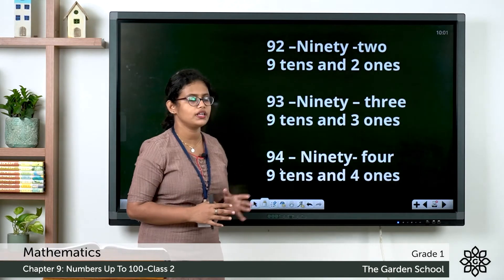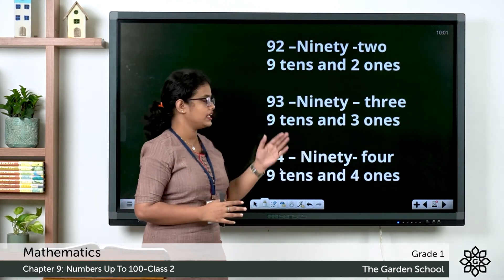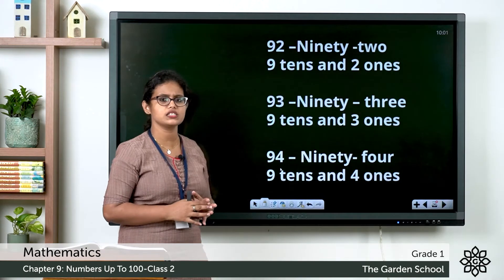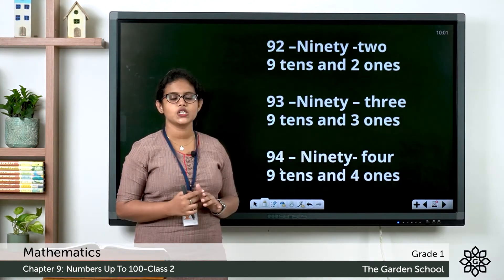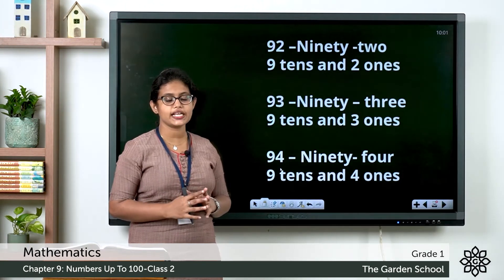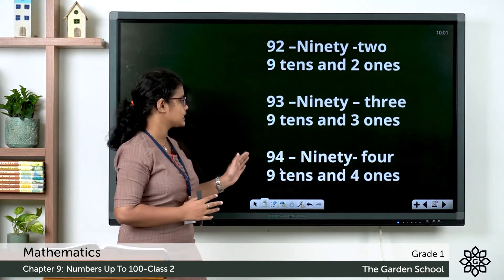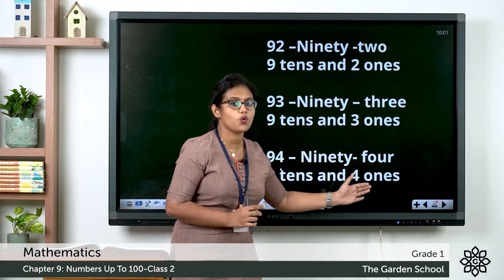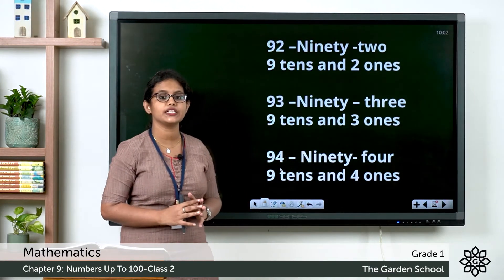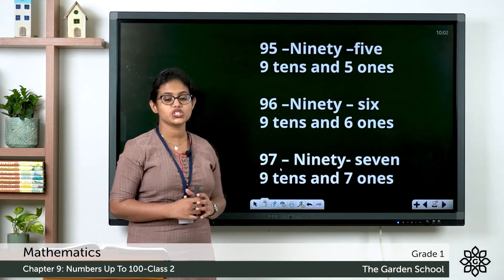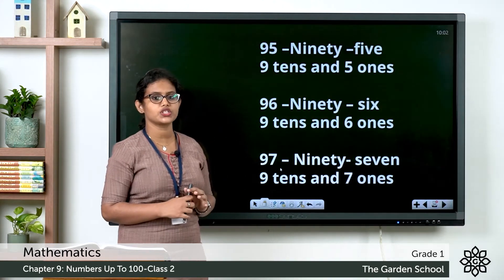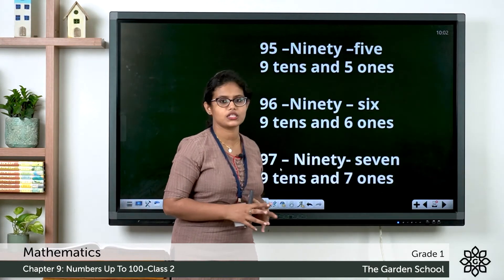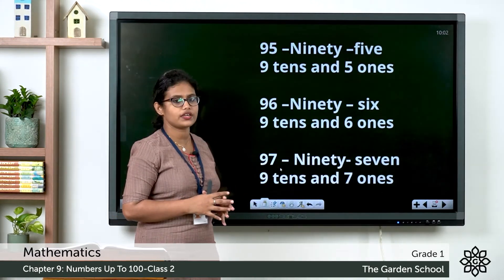Which is the next number? 93. 9 tens and 3 ones makes 93. So which is the next number after 93? It is 94. 9 tens and 4 ones makes 94. Which is the next number after 94? It is 95. 9 tens and 5 ones makes 95.